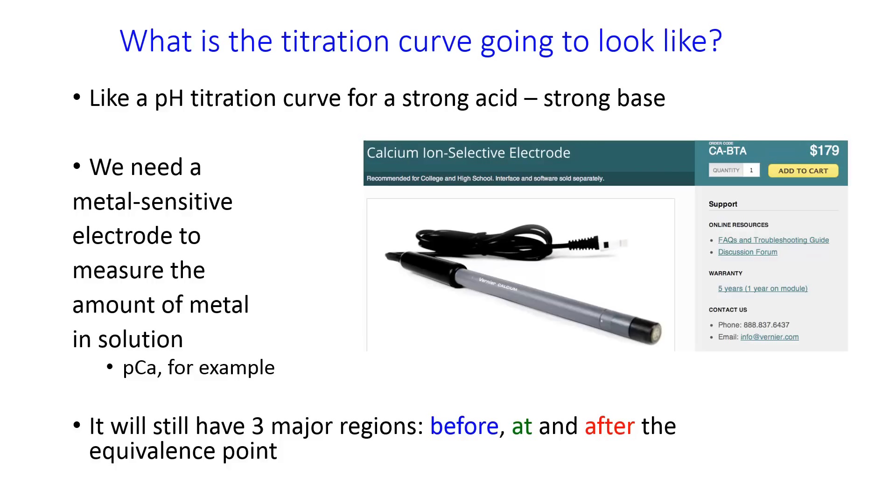In any case, this is still going to have the same regions as we talked about for an acid-base titration curve, before the equivalence point, at the equivalence point, and after the equivalence point.